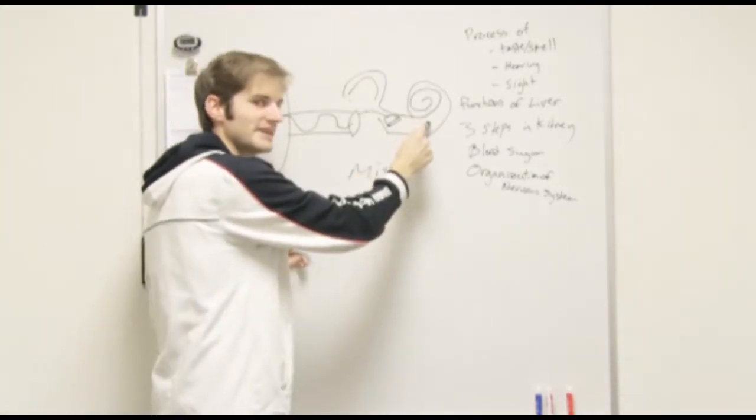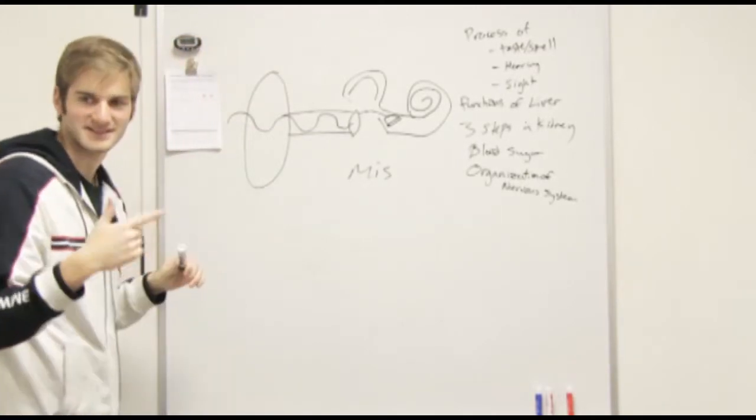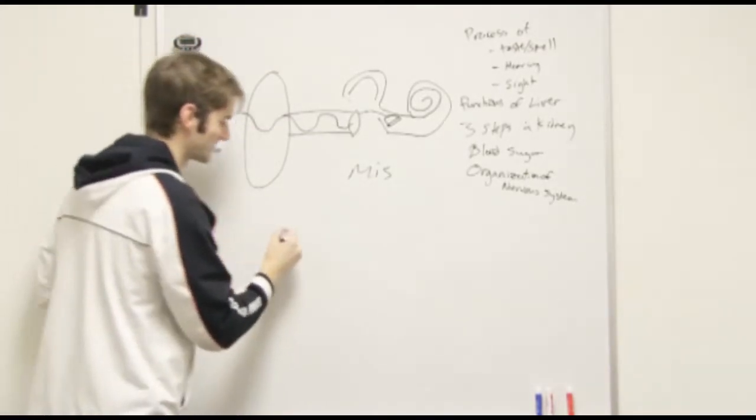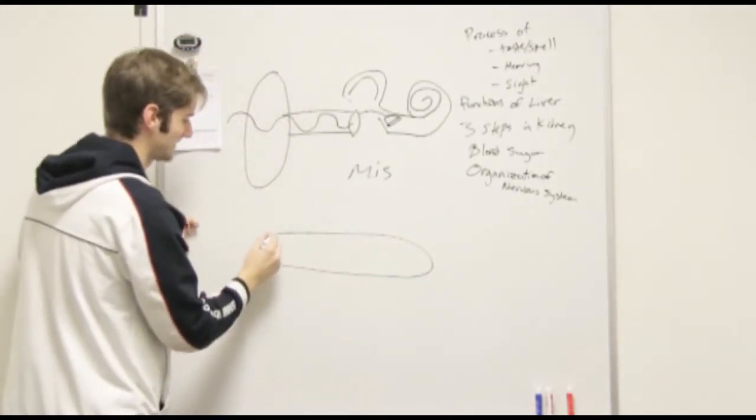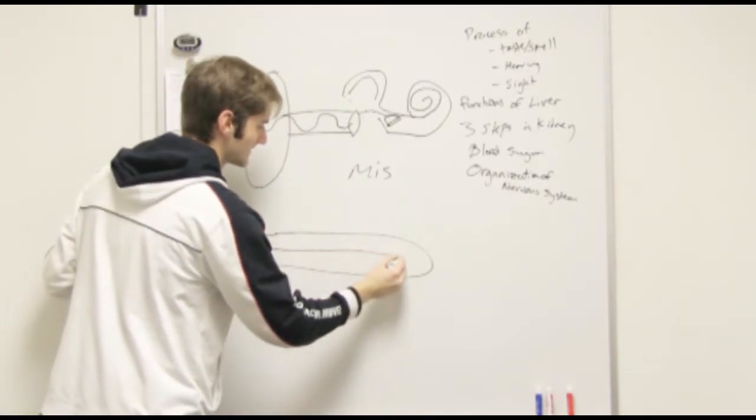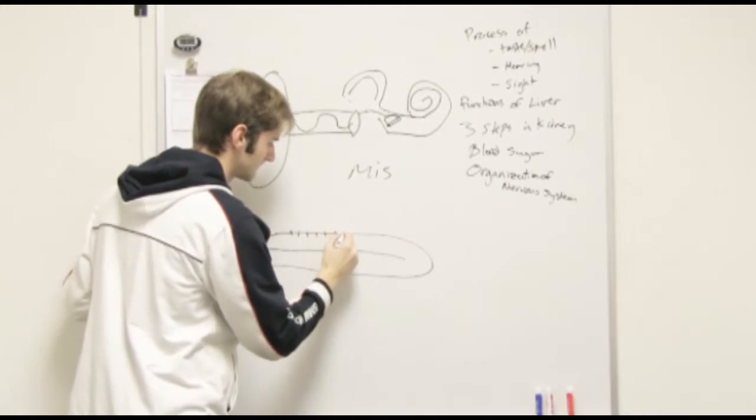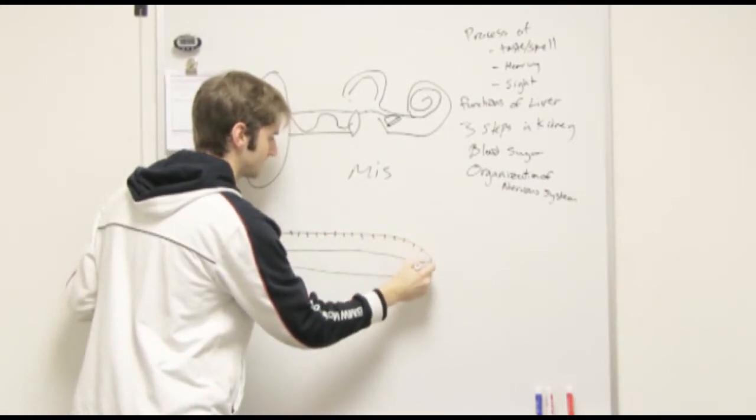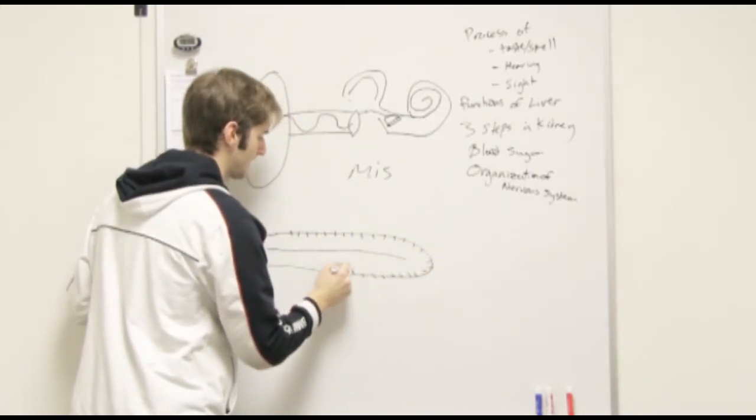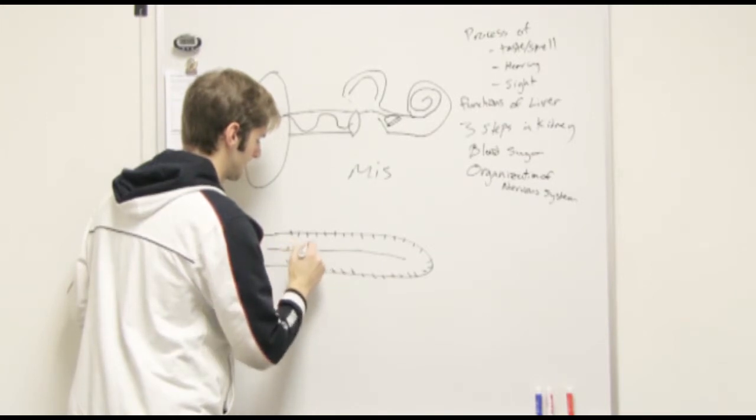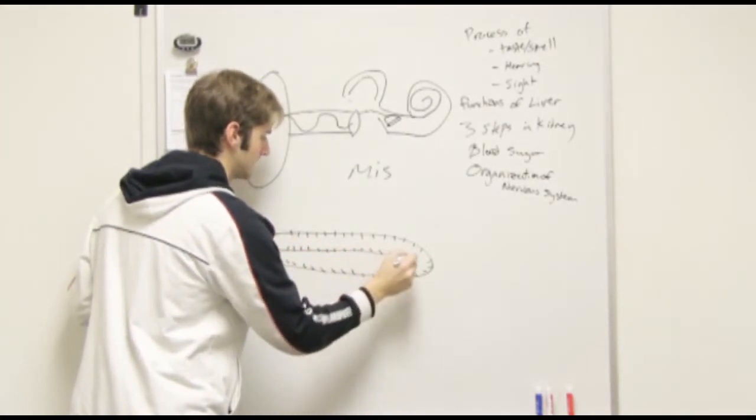So it's just hitting that oval window, which sends vibrations through there. Now I'm going to take the cochlea and I'm going to unravel it because it's shaped like a snail shell. I'm going to unravel it for a second. So this is our cochlea unraveled. I actually remember talking about this in class. I'm really impressed with myself.